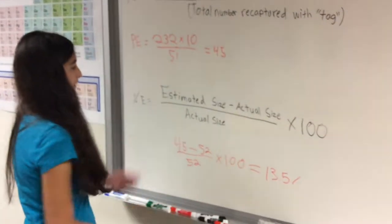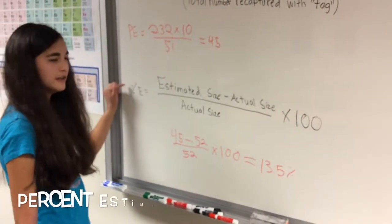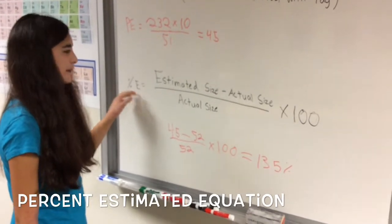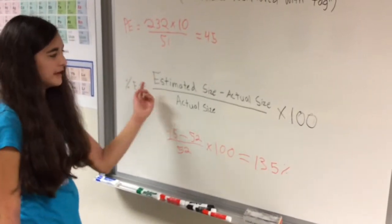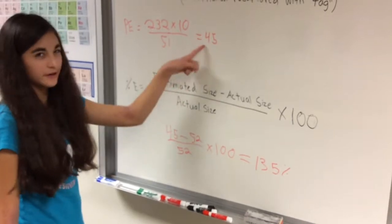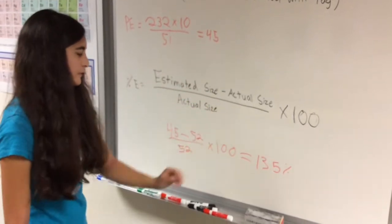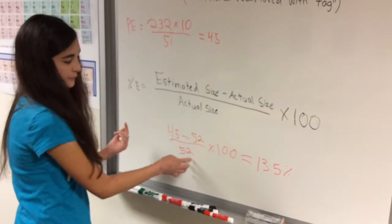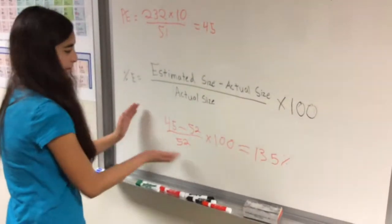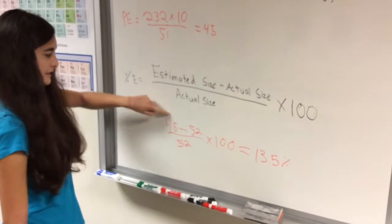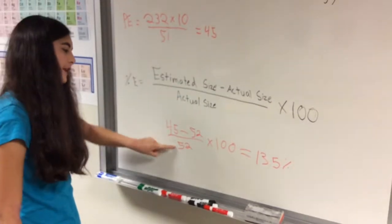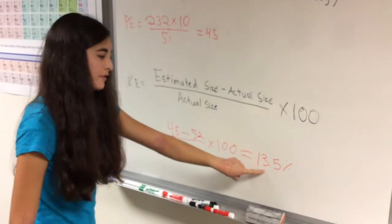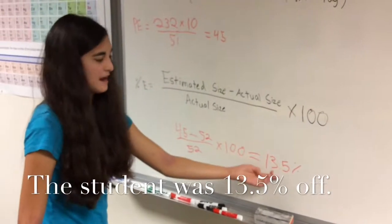Then we use that data again for this. Now you're going to use that for the percent, how much you were off percent-wise. So you do the estimated size, like the size you figured out there, minus the actual size, which in this one was 52. Then you'll divide that by the actual size times 100. The estimated size minus the actual size divided by the actual size times 100, which this one was about 13.5, and that was percent error.